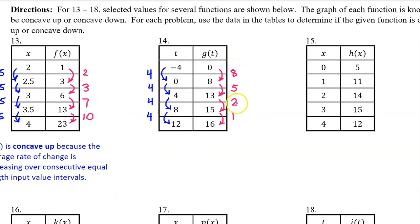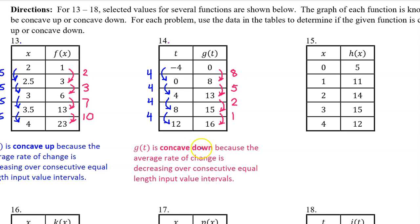For number 14, these are the changes in the output values and the changes in the input values. Because we have consecutive equal length input value intervals, we don't need to calculate the rate of change to see that it is decreasing. Therefore, g of t is concave down. G of t is concave down because the average rate of change is decreasing over consecutive equal length input value intervals. By the way, 'consecutive' means the intervals are all connected — for example, negative 4 to 0, 0 to 4, 4 to 8, 8 to 12 — there are no gaps.